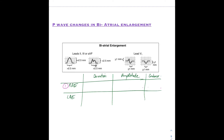For right atrial enlargement: the duration is not affected, because the activation of the extra part of the right atrium coincides with that of the left, so there is no net change in duration. The amplitude increases beyond the normal 2.5 mm, and the contour — the P wave becomes peaked and pointed.